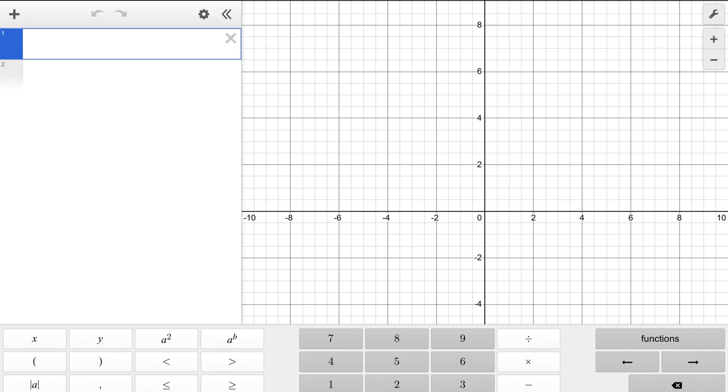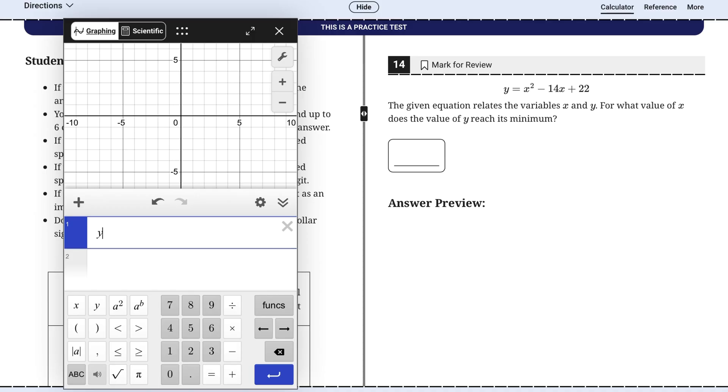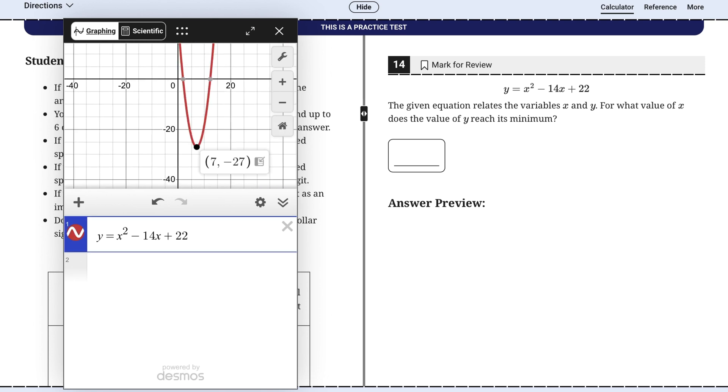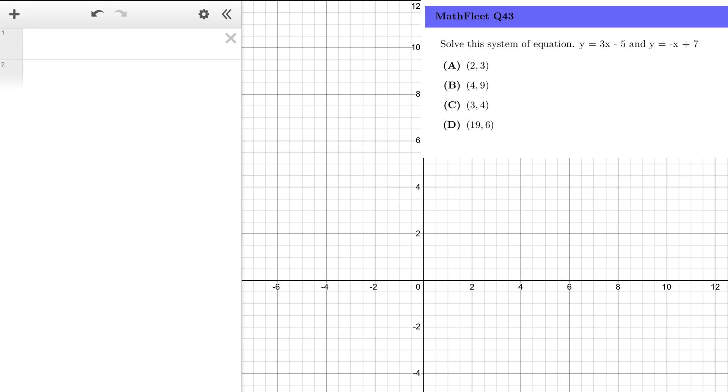Next, think in graphs or the Desmos mindset. The single greatest tool you have on the digital SAT is the built-in Desmos graphing calculator. If you're only using it for basic arithmetic, you're leaving a massive number of points on the table. Your new mindset should be this. Anytime you see an equation with variables, your first thought should be, can I graph this? Let's say a question asks for the solution to a system of equations: y equals 3x minus 5 and y equals negative x plus 7.